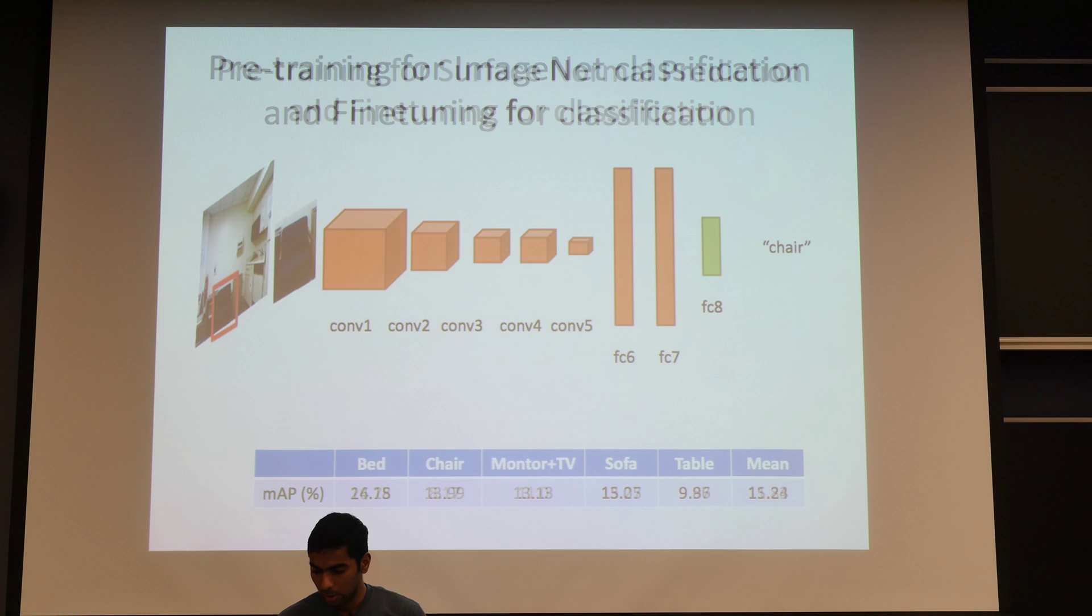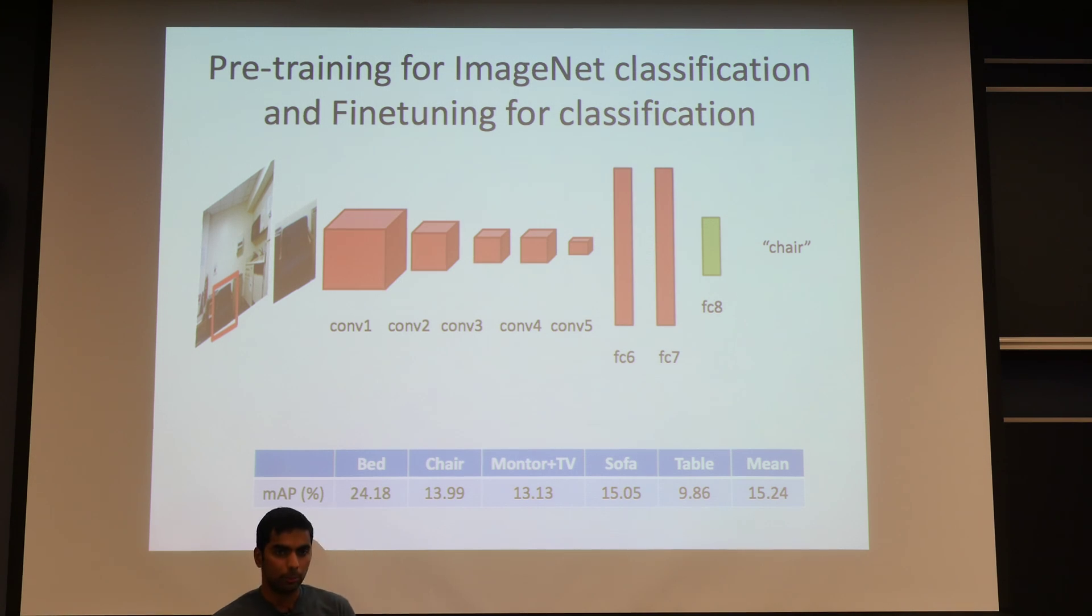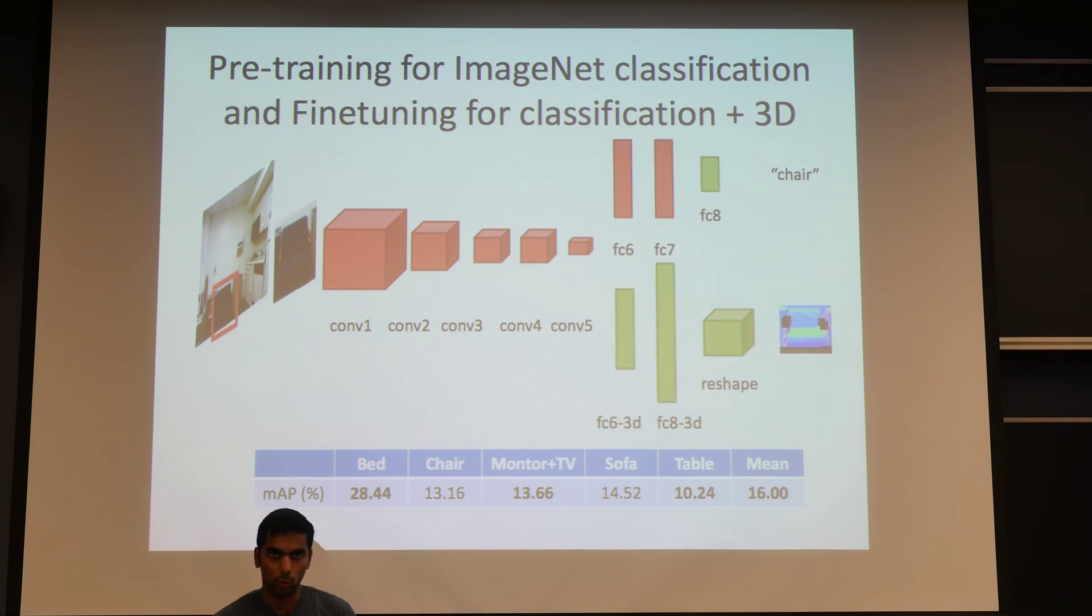Next we tried pre-training the network for an even more strongly labeled task of image classification on ImageNet, and since that is trained using semantic labels, that gave us around a 3% boost in MAP. Finally, we tried our own approach of jointly training for both classification and for predicting surface normals, and that gave us another 1% boost in the MAP.